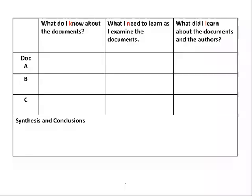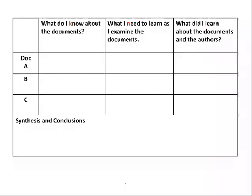Now, this KWL chart is a little more complex, because it also asks students to look at various primary source documents. It will be a little harder to fold. Here's how you do it.